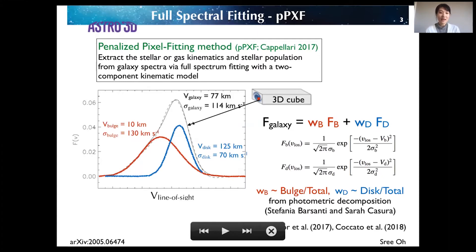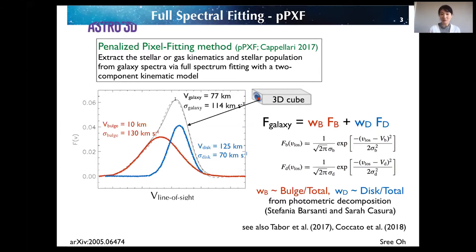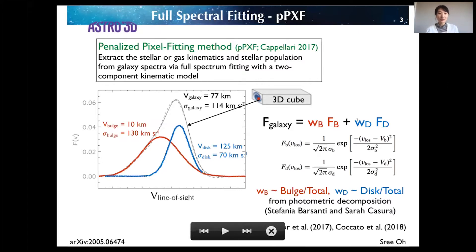This is a schematic diagram showing how to decompose bulge-and-disk kinematics using 3D spectroscopic cubes. The black line is an example of the line-of-sight velocity distribution of a galaxy from the galaxy spectrum. We can estimate the total shape of the line-of-sight velocity distribution using the 3D cubes from the SAMI galaxy survey.